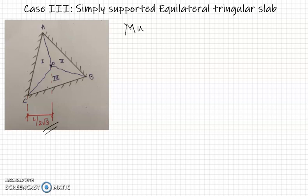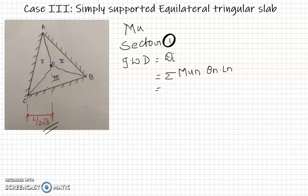For sector 1, the internal work done Wi equals summation of mu n into theta n into ln. Here the ultimate moment will be mu. Theta n is the same deflection diagram as we have done for square slab. From the edge, the deflection will be in the same direction, and this will be theta n.